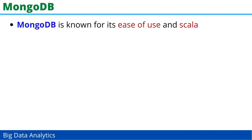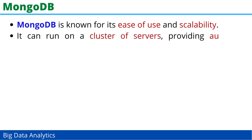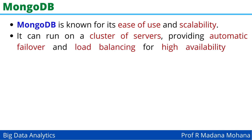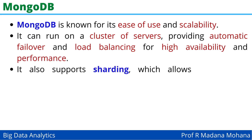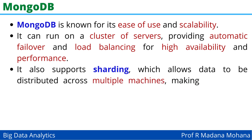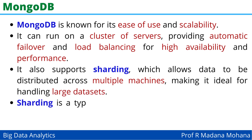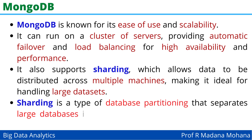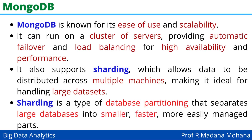MongoDB is known for its ease of use and scalability. It can run on a cluster of servers, providing automatic failover and load balancing for high availability and performance. It also supports sharding, which allows data to be distributed across multiple machines, making it ideal for handling large datasets. Sharding is a type of database partitioning that separates large databases into smaller, faster, and more easily managed parts.